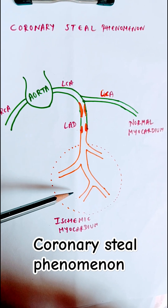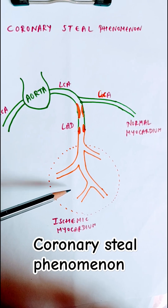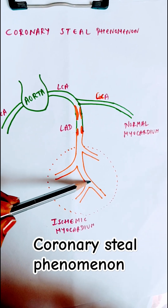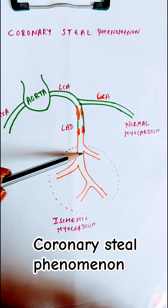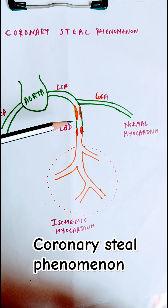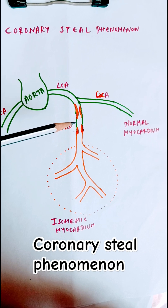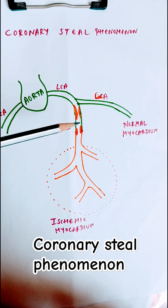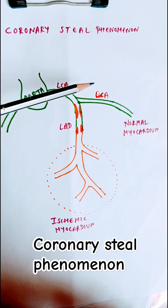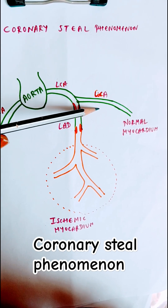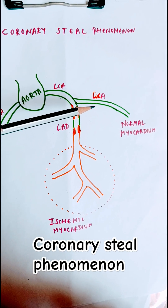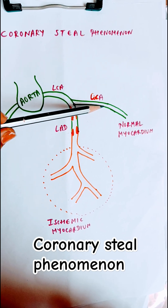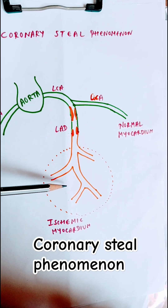Because of this atherosclerotic plaque, the downstream myocardial region becomes ischemic. This leads to compensatory vasodilation of the blood vessels in that area. Now, when a person starts exercising, or when certain vasodilator drugs like adenosine, dipyridamole, or nitroglycerin are given, there is increased blood flow to the healthy myocardium, which diverts blood away from the ischemic zone, worsening its condition.